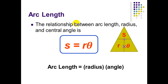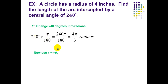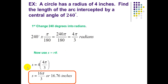Arc length: the relationship between arc length, radius, and central angle is given by S equals R times theta, where theta must be in radians. Example: a circle has a radius of 4 inches. Find the length of the arc intercepted by a central angle of 240°. First, convert 240° to radians: 240 times π/180 equals 4π/3. Now use the formula: S equals R times theta equals 4 times 4π/3, which gives S approximately equal to 16.76 inches.